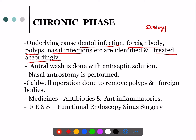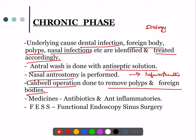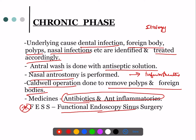You can do an antral wash, similar to a gastric lavage, with an antiseptic solution; or you can perform nasal anterotomy, which is done in the inferior meatus; or you can go ahead with the Caldwell-Luc operation to remove polyps as well as foreign bodies inside the sinus. Apart from this, you can use anti-inflammatories and antibiotics.